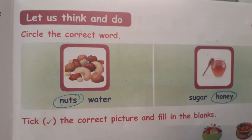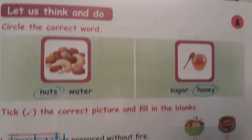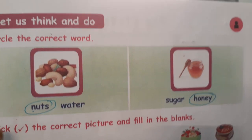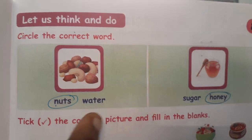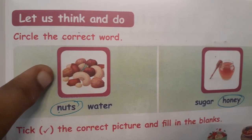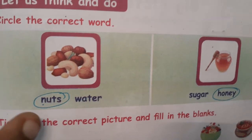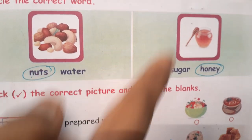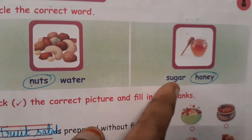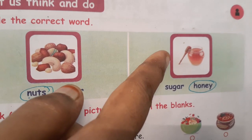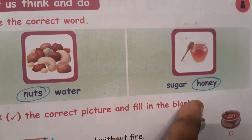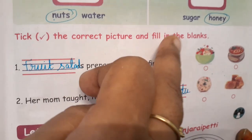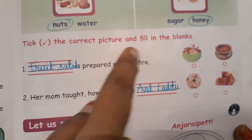Students, take your English term book, second term, page number 97. Circle the correct word — you have to see the picture and circle the correct word. See the options: nuts, water. What is this? Yes, these are nuts, so we are going to circle 'nuts.' Next picture — the options are sugar, honey. What is this? Yes, this is a bottle of honey, so we are going to circle 'honey.'